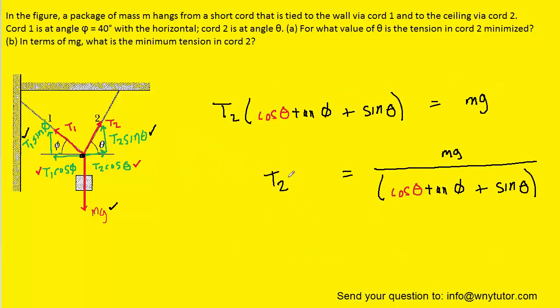We can now divide the term in parentheses over to the right hand side. So we have accomplished our goal. We have T2 as a function of the angle theta. We know the angle phi is 40 degrees, so we can go ahead and plug that in.